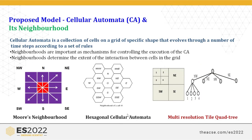The proposed cellular automata model is one of the important and well-known models in mathematical modelling, with applications in forest fire simulation, traffic signal processing, image processing, and more. Cellular automata consist of cells and a grid of specific shapes that evolve through a number of time steps according to a set of rules. The neighbourhood is an important mechanism for controlling the execution of cellular automata and determines the interaction between cells in the grid. We represent three models: Moore's neighbourhood, hexagonal cellular automata model, and multi-resolution tile quad tree.